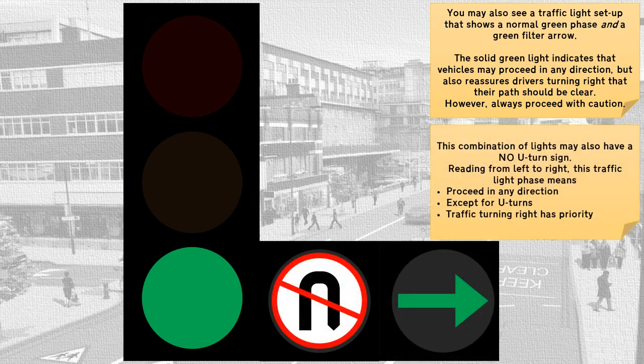This combination of lights may also have a no U-turn sign. Reading from left to right, this traffic light phase means proceed in any direction except for U-turns, but traffic turning right has priority.